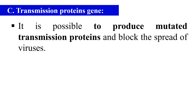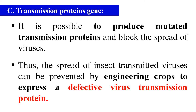Next are transmission protein genes. Transmission involves a close coordination and interaction between the plant virus and the insect vector for the spread of virus from one plant to another. Certain virus-coded transmission proteins help in the movement of virus from one plant to another. If we introduce a mutated transmission protein, it is possible to block the spread of viruses. In this strategy we introduce the gene for the mutated transmission protein to block viral spread, thereby making other plants virus resistant.